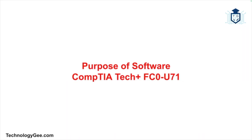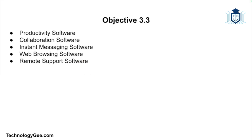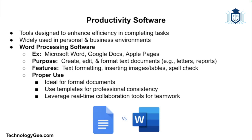What's up everybody, this is Tech G back with another video to help you successfully pass the CompTIA Tech Plus certification exam. In this video we're going to break down the different types of software used in today's workplace environments. We'll cover productivity software, collaboration software, instant messaging software, web browsing software, and remote support software. Understanding these tools and how they're used is essential for anyone preparing to enter or advance in the tech industry.